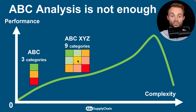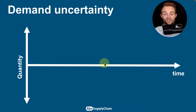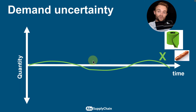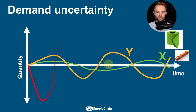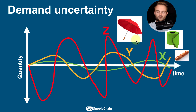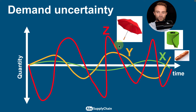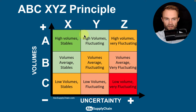That's why we need to move from three categories to nine categories by considering the level of demand uncertainty. Some products are very predictable — like toilet paper or French baguette, where you consume the same quantity every day. Others have more variation, and some are very unpredictable — like umbrellas, where you don't know exactly when it will rain. For unpredictable products, you technically need more safety stock to ensure availability.